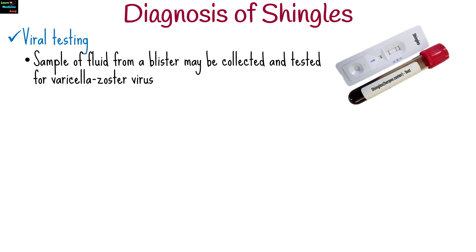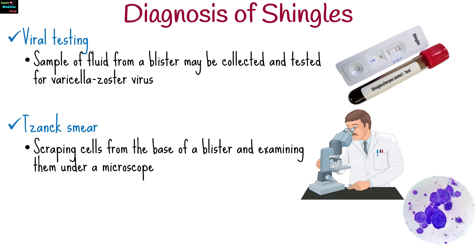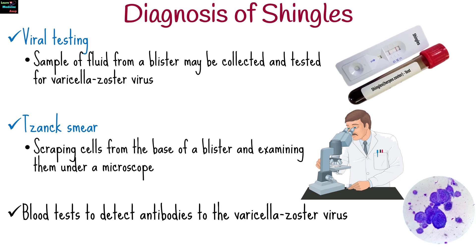In some cases, a sample of fluid from a blister may be collected and tested in a laboratory to confirm the presence of the varicella zoster virus. A Tzanck smear involves scraping cells from the base of a blister and examining them under a microscope. Blood tests may also be performed to detect antibodies to the varicella zoster virus, which can help confirm a diagnosis of shingles.